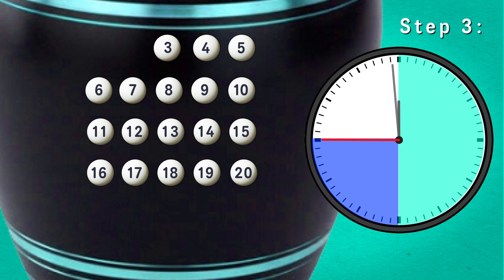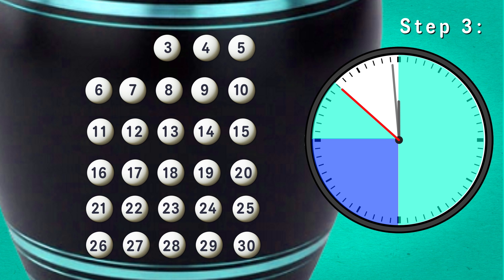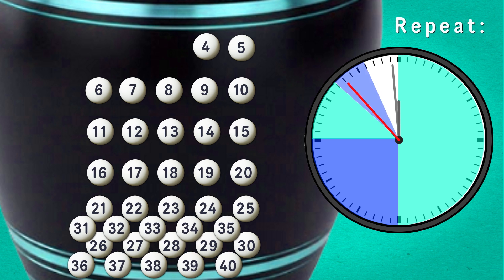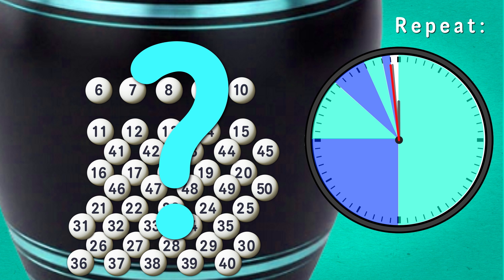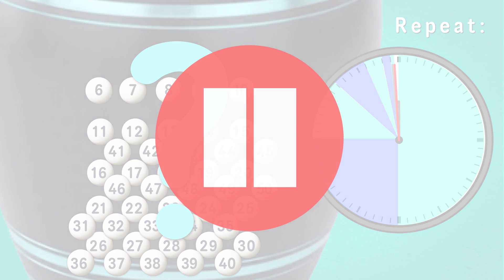Step three, 1/8th minute before noon, place balls 21 through 30 in the urn and remove the lowest numbered ball, ball number three. Repeat this procedure over and over. How many balls are in the urn at noon? Pause here to think about it.